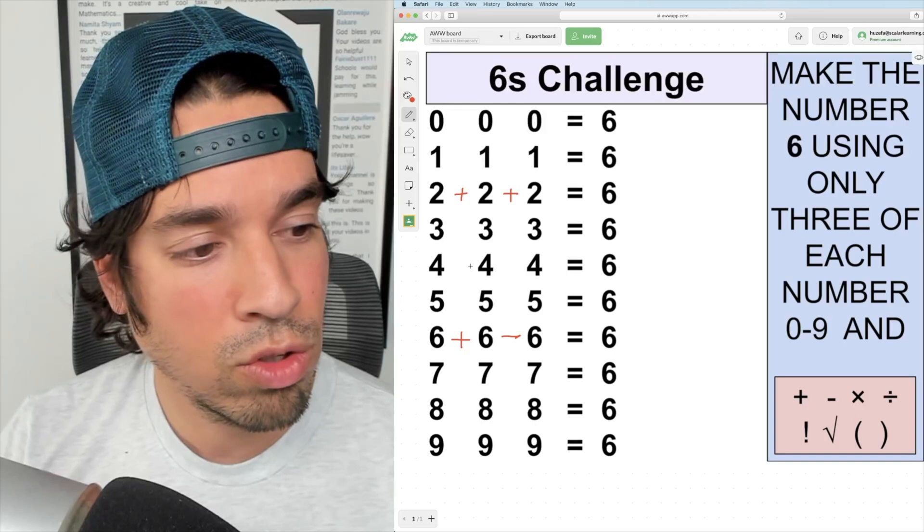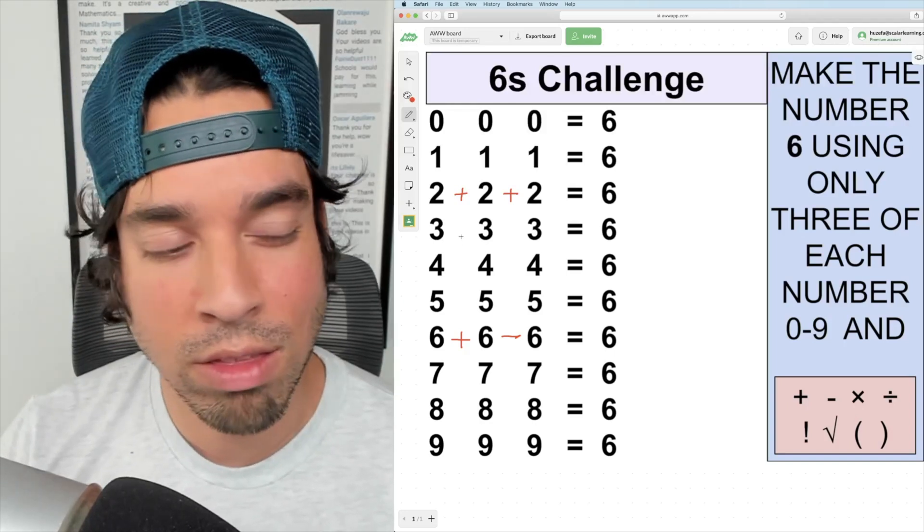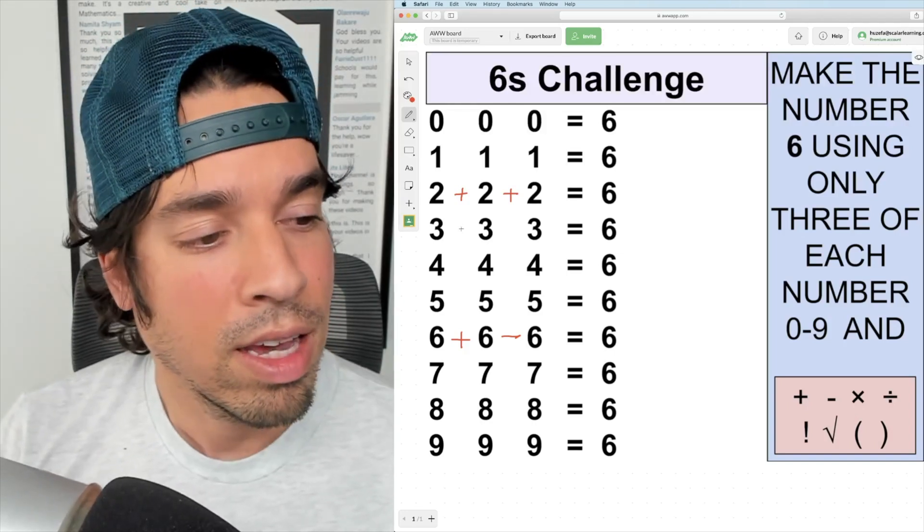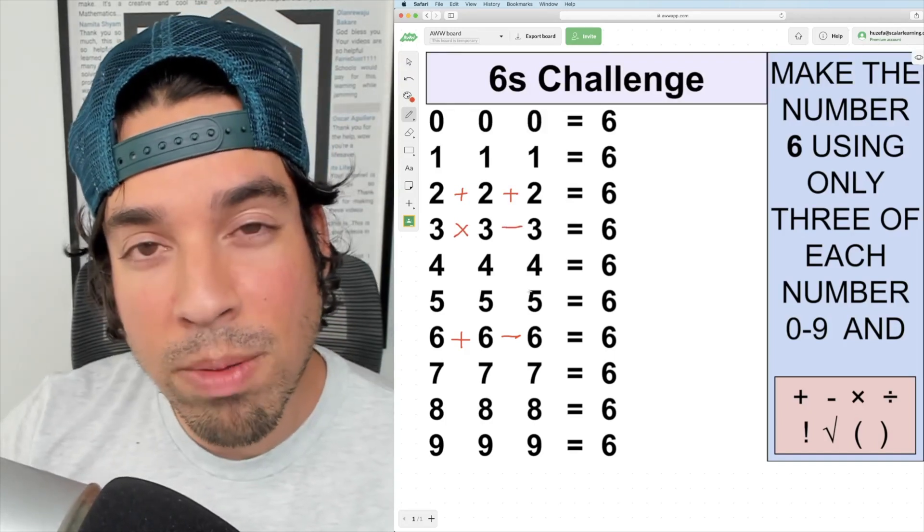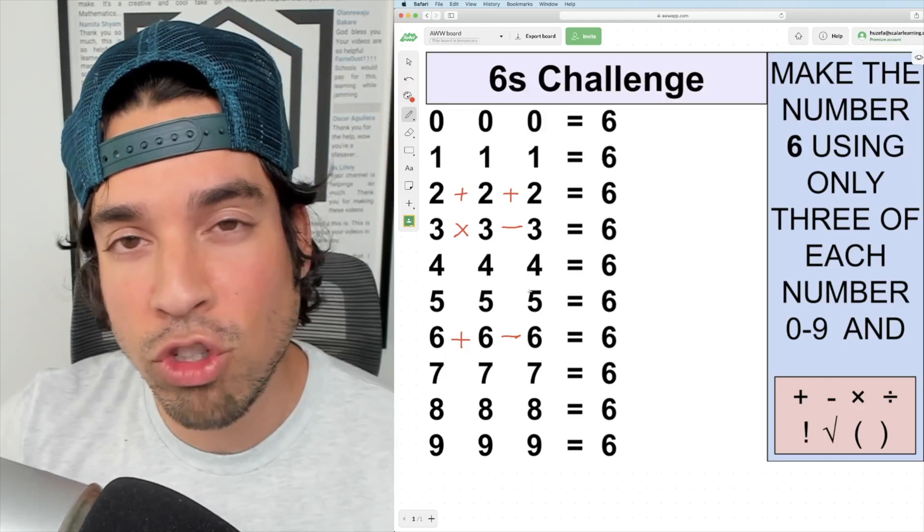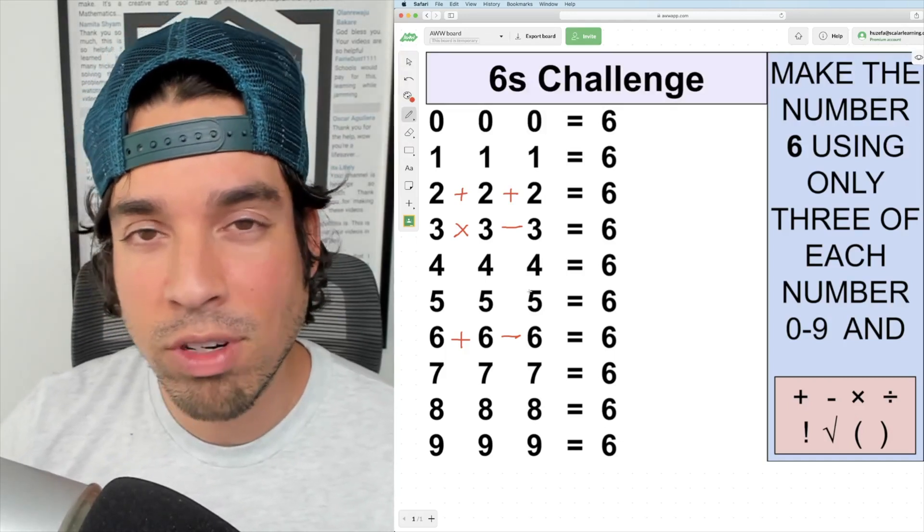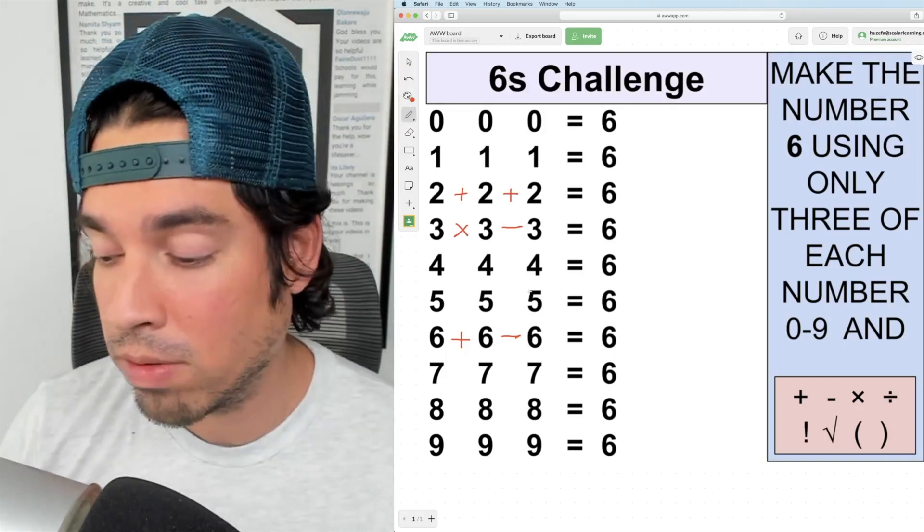Now let's go on to something a little more challenging with the threes. If I do a multiplication symbol here and then a subtraction, now I got six. By the way, I do want to mention these are only one set of solutions. There are a lot of different solutions you can come up with. This is just the way I'm solving it.